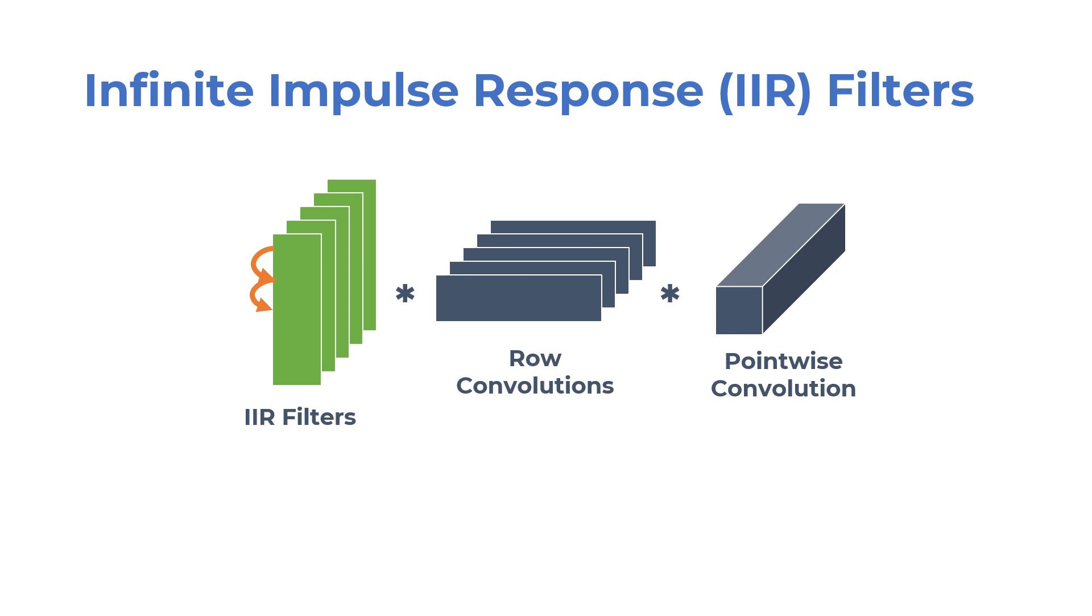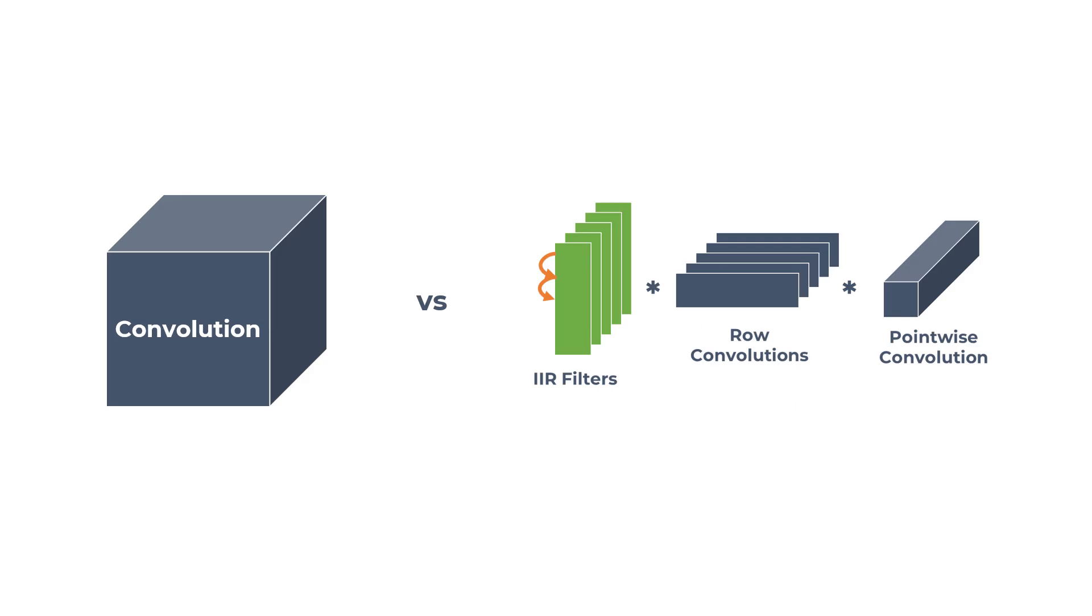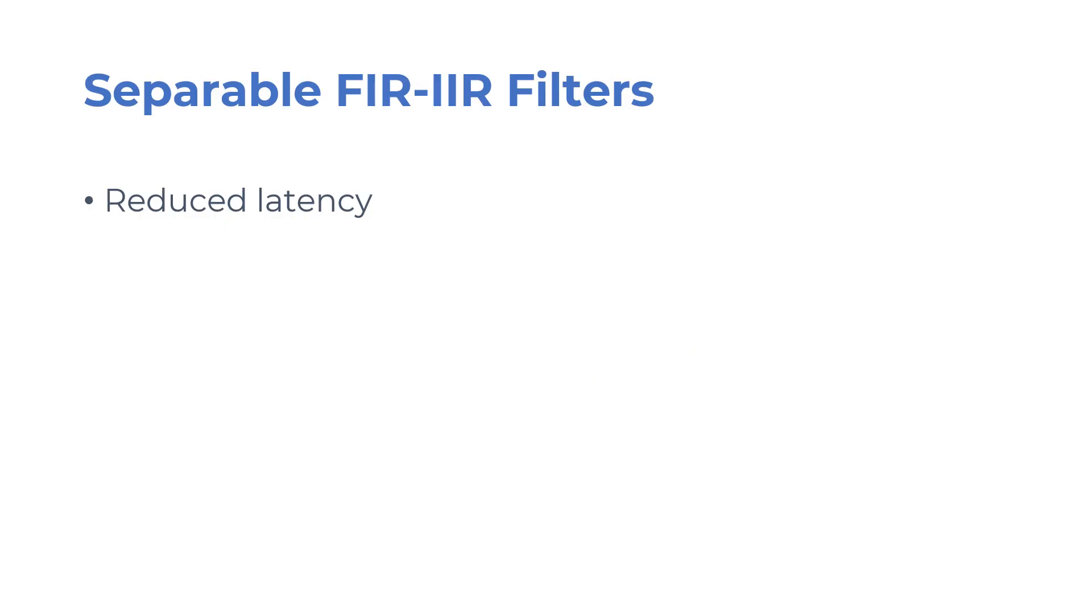We address this problem by replacing the vertical convolutions in a three-way separable convolution layer with infinite impulse response filters. You can think of those IIR filters as recurrent neural network modules that summarize pixels in the vertical direction. Unlike fixed window convolutions, our separable FIR-IIR filters start processing their input as soon as the pixels arrive, without having to buffer the lines that would be spanned by a fixed-size window. This reduces latency and the size of the line buffers, leading to significant savings in silicon area. You can find our paper in the description below.